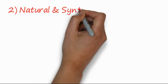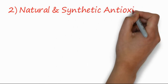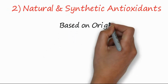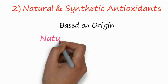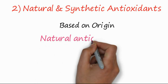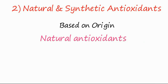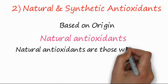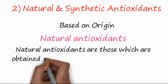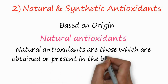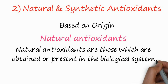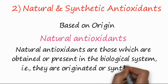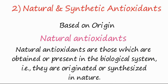The second type of classification of antioxidants is called natural and synthetic antioxidants. This classification is based upon origin. Natural antioxidants are those which are obtained from or present in biological systems — that is, they are originated or synthesized in nature.